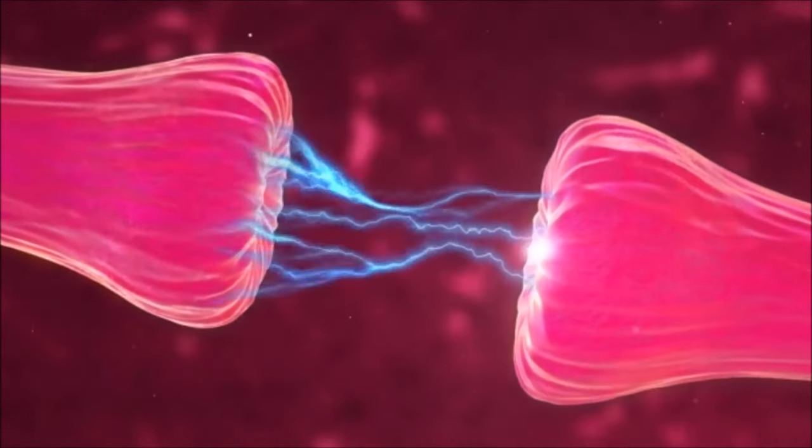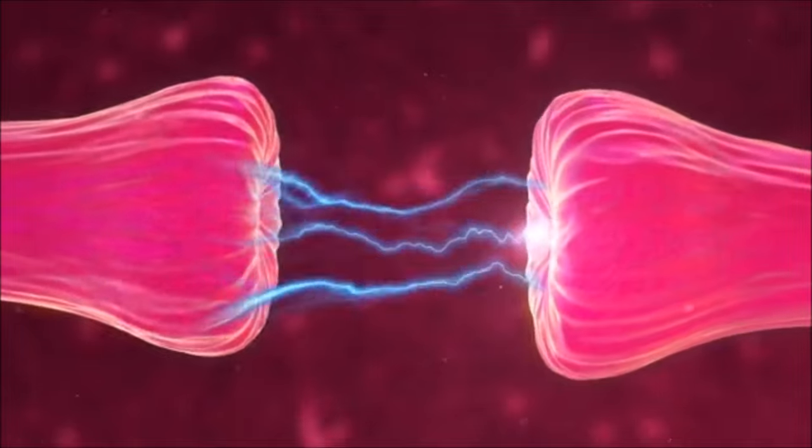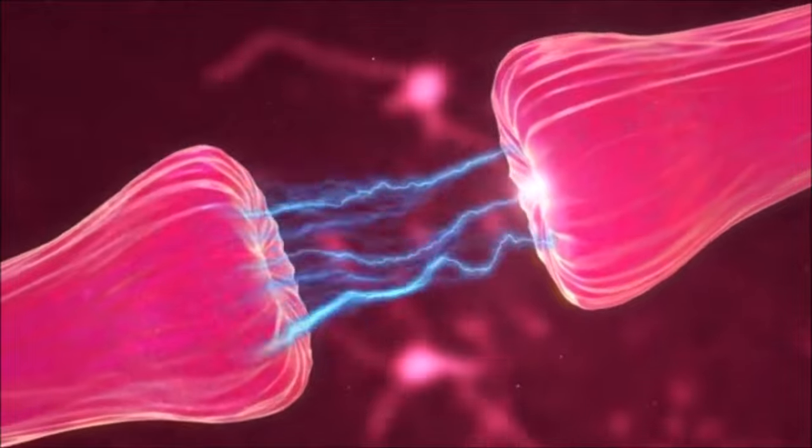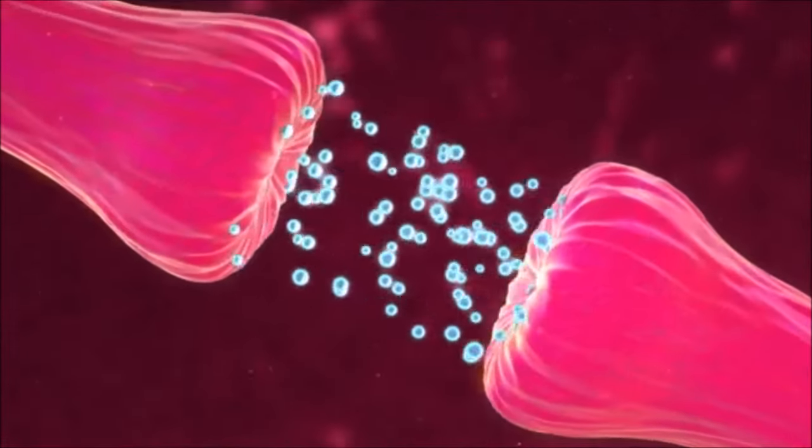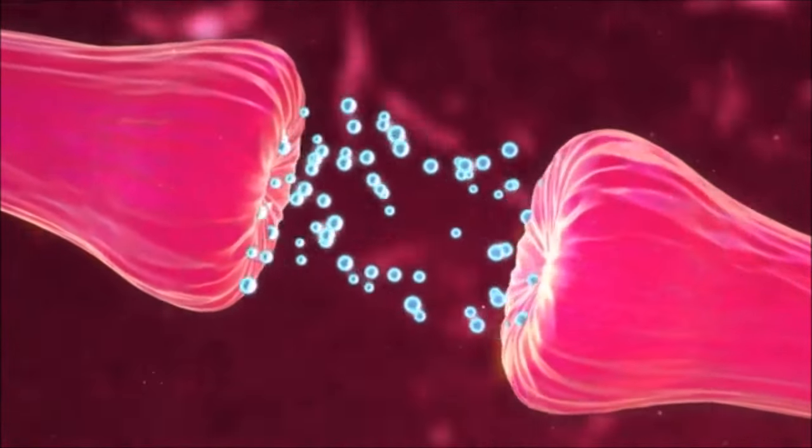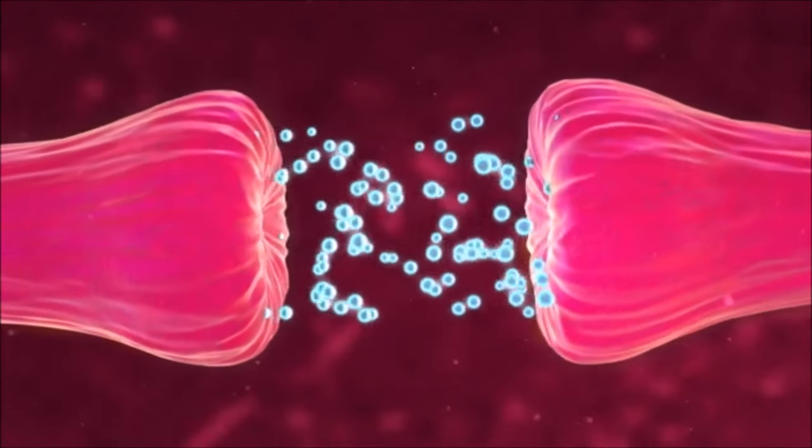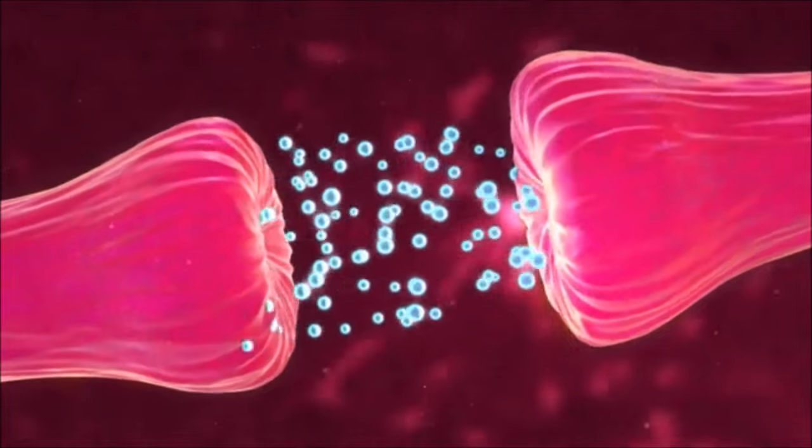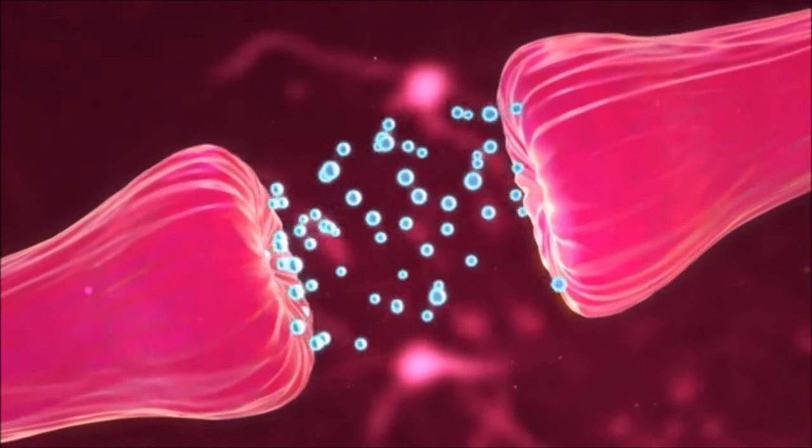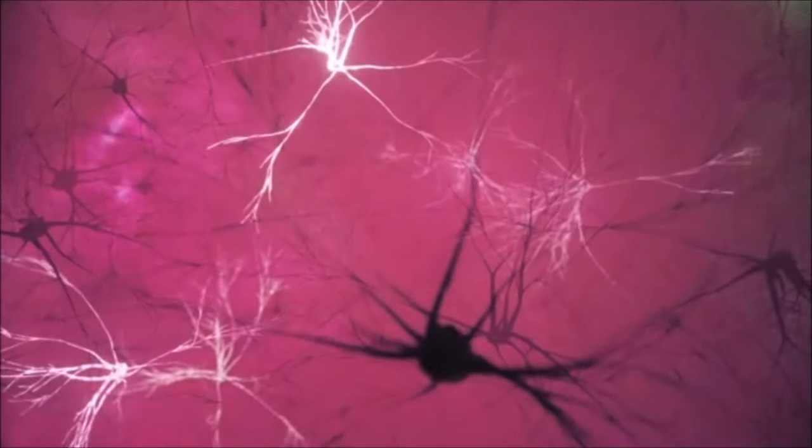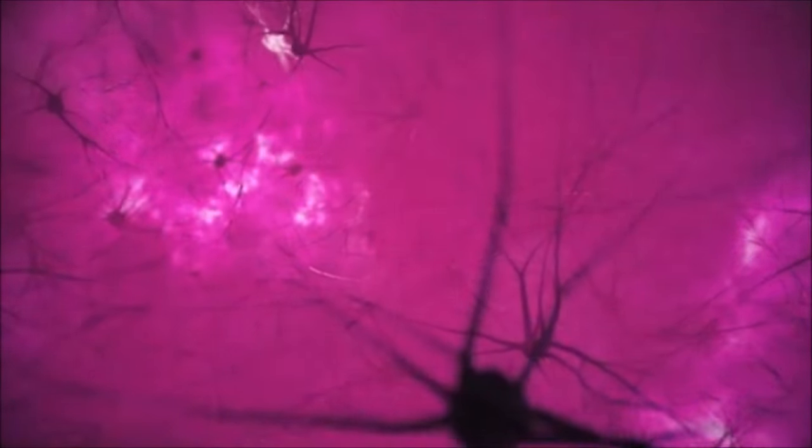Communication between neurons occurs through small gaps called synapses. The axon terminal of one neuron forms a synapse with the dendrites of another neuron. Synapses convert an electrical signal of a neuron into a chemical signal, facilitating information transmission. Dendrites and axons work together to facilitate information transmission between nerve cells.